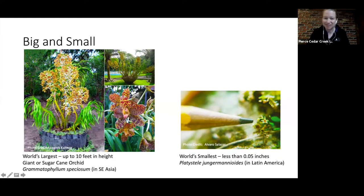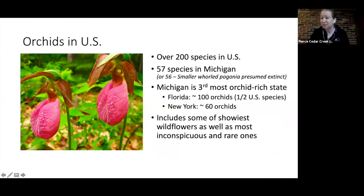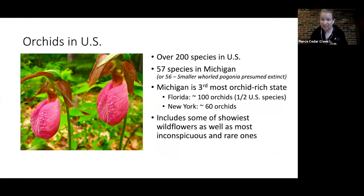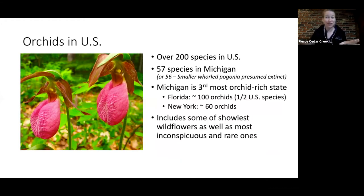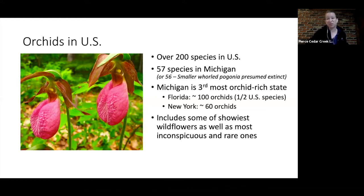In the US we have about 200 species. In Michigan, depending on your source, there are about 57 species on Michigan Flora. Michigan is the third most orchid-rich state in the US, behind Florida and just behind New York. They include some of the showiest wildflowers as well as some of the most inconspicuous and rare ones.